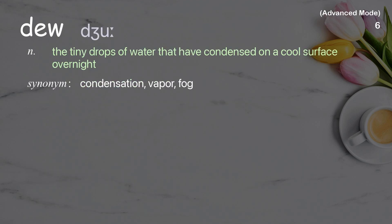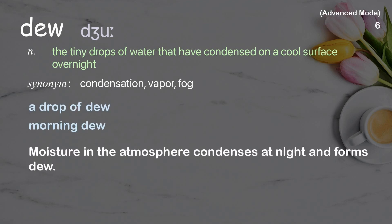Dew: The tiny drops of water that have condensed on a cool surface overnight. Examples: A drop of dew, Morning dew. Moisture in the atmosphere condenses at night and forms dew.